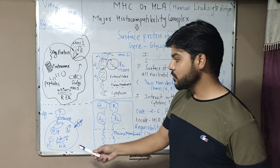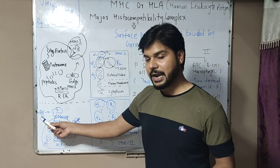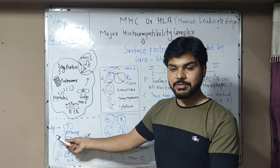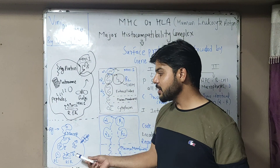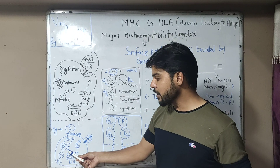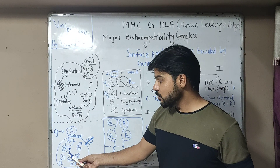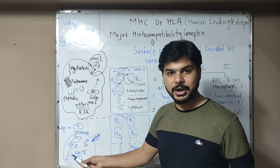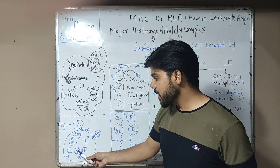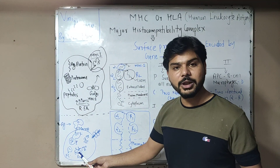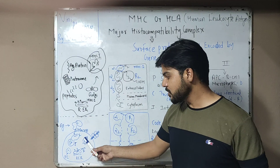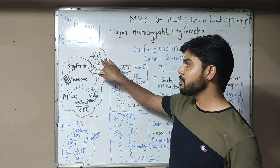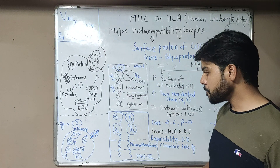For MHC Class 2 synthesis: exogenous antigens — bacteria or viruses from outside — are internalized by macrophages through phagocytosis. They are broken down in endosomes, lysosomes, or phagolysosomes into peptides. MHC Class 2 complex is synthesized in the endoplasmic reticulum and then transported to the surface, where the peptide-MHC Class 2 complex is presented.